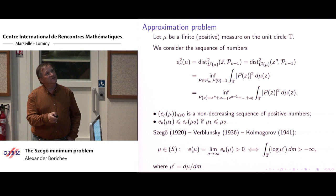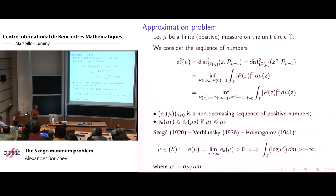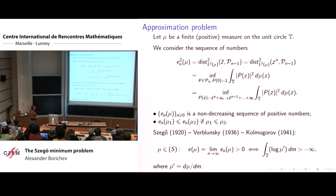A finite positive measure on the unit circle. As soon as we have this, we consider the space L2 with respect to mu, and we can calculate the square distance in this situation between z-bar and the polynomials of order up to n minus one. We can rewrite this, because everything is symmetric, as a distance from z^n to all these polynomials, or the infimum of the integrals of the polynomials of order n which are normalized at the origin, or if you want, the infimum of the monic polynomials of order n.